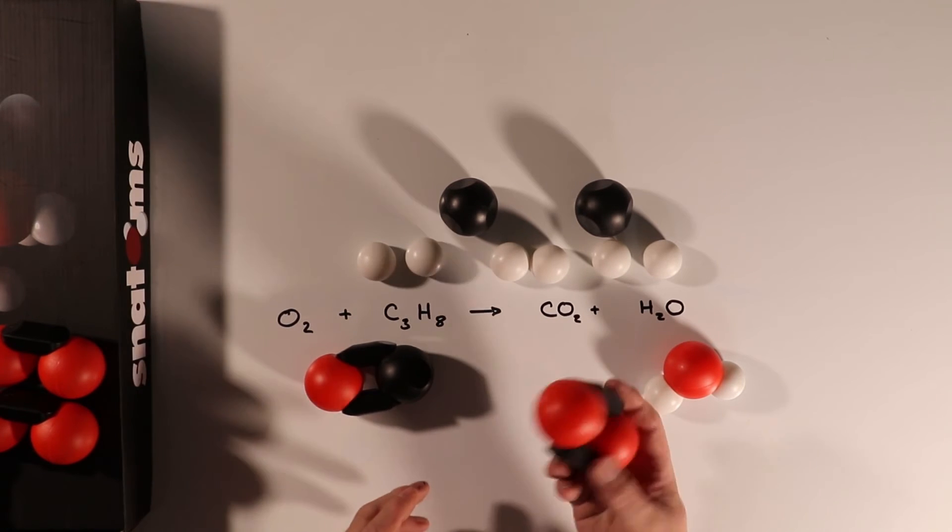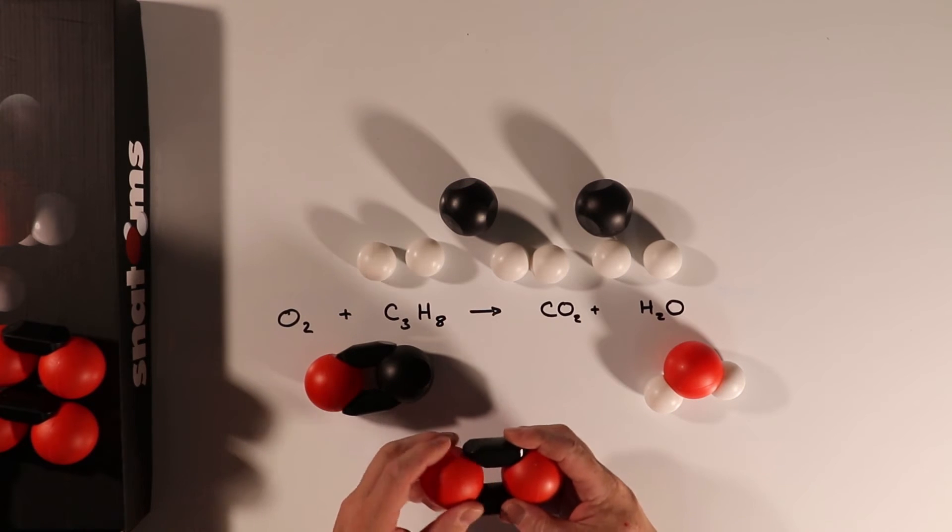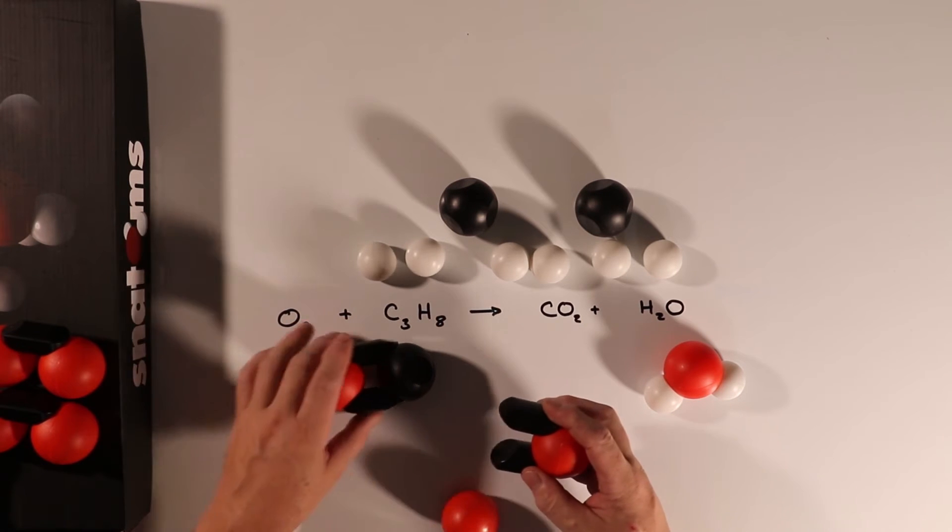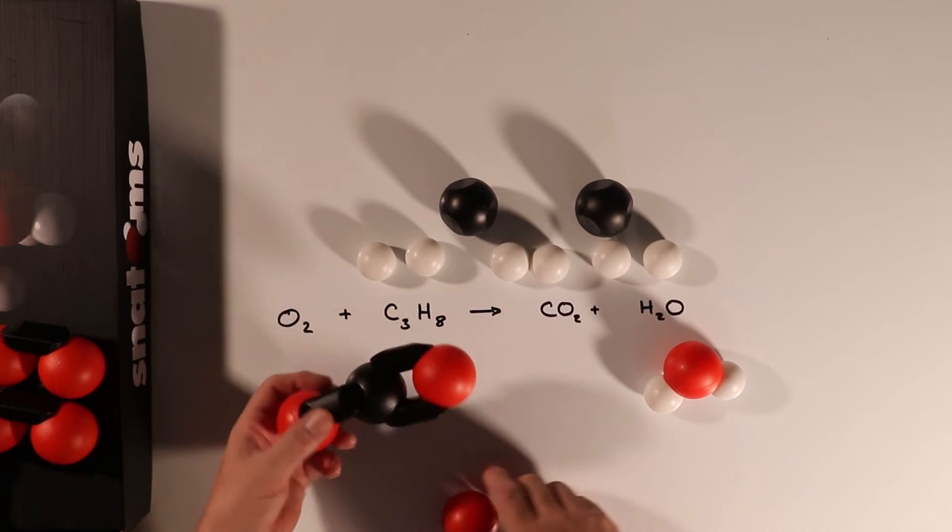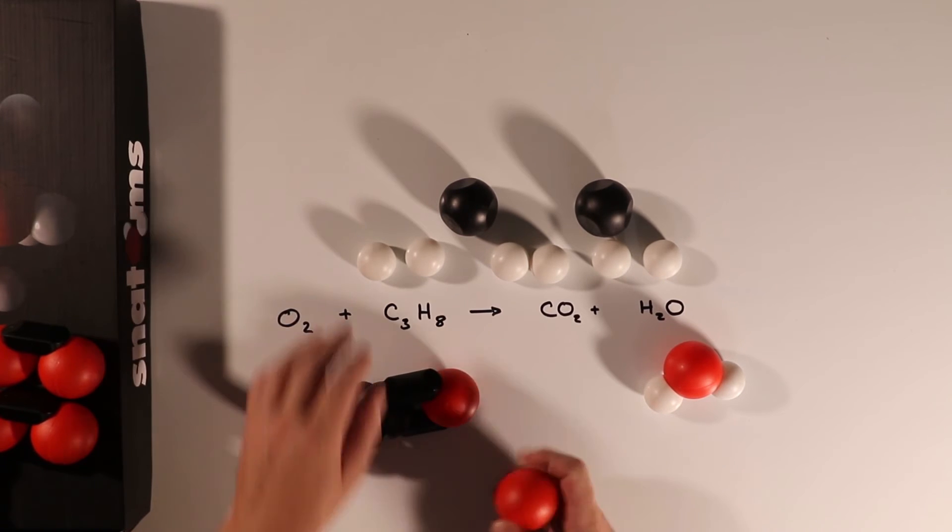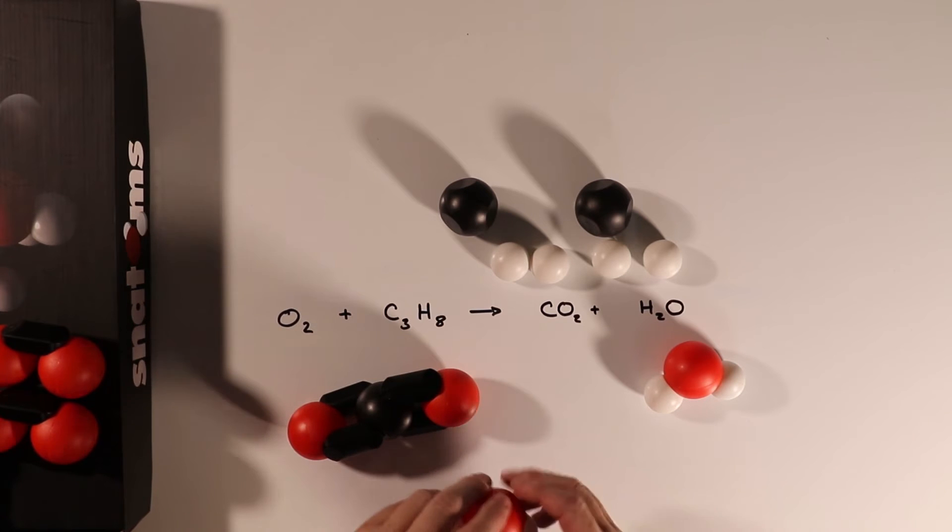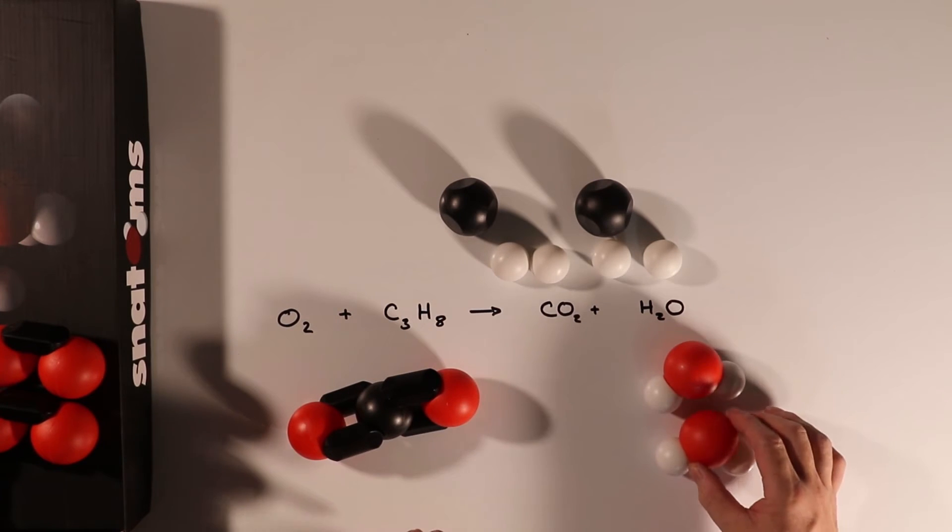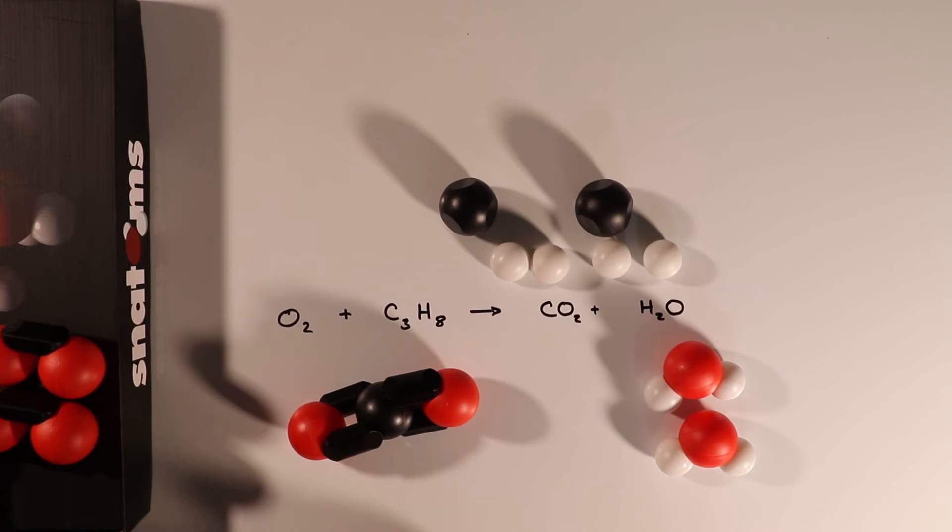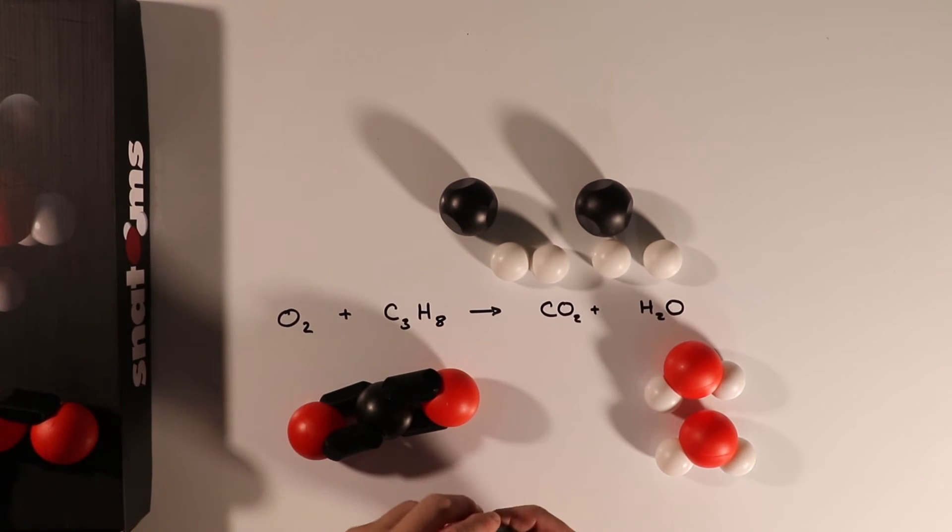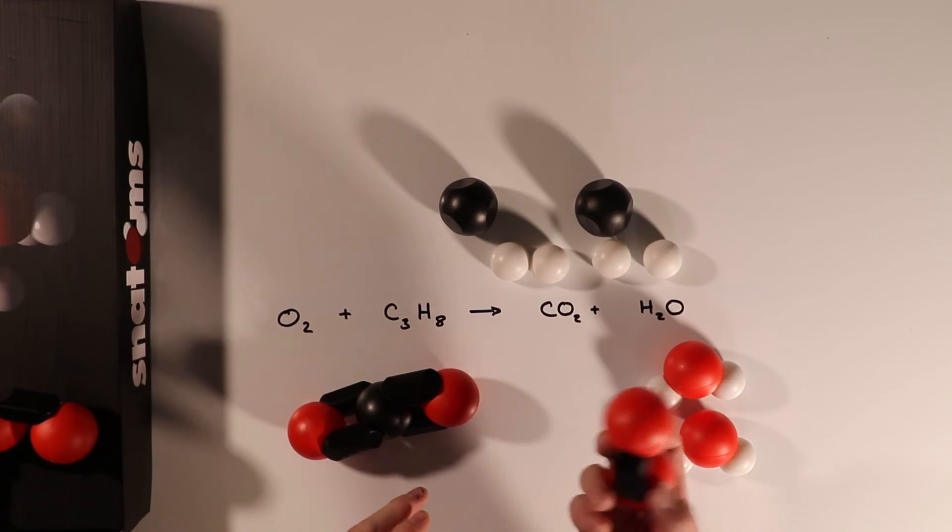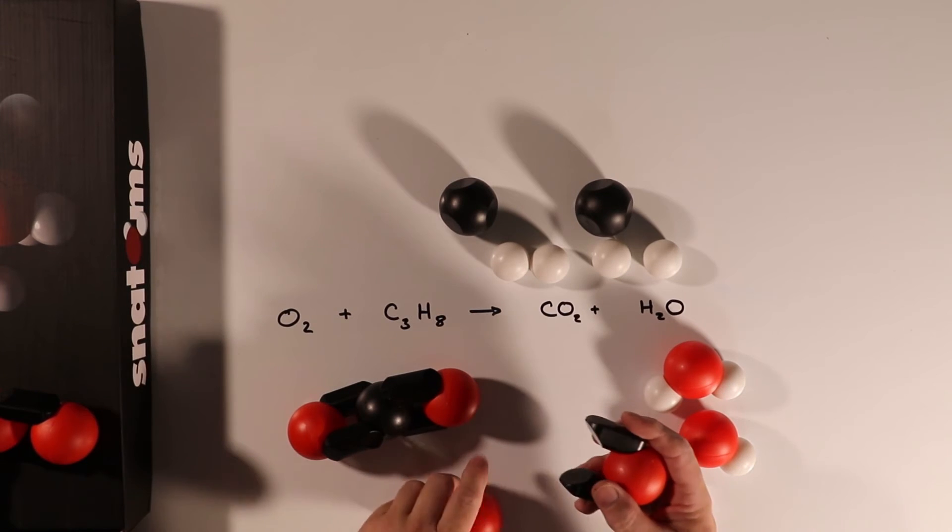We take this oxygen molecule from the surroundings and react this to produce more products. Here we've produced carbon dioxide, and this is oxygen molecule number two that we've used. There are still more parts of propane left, so we need yet another oxygen atom. This is oxygen molecule number three.